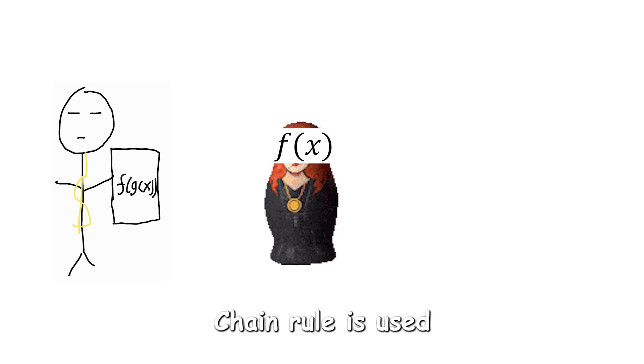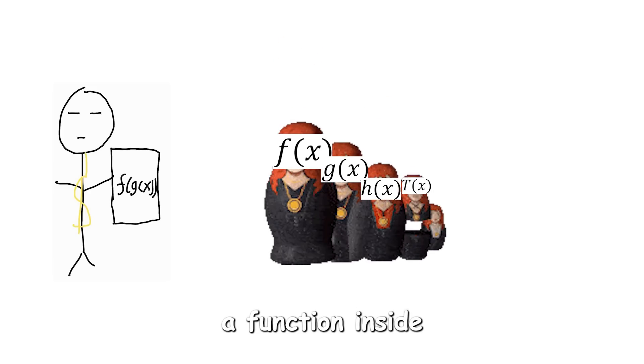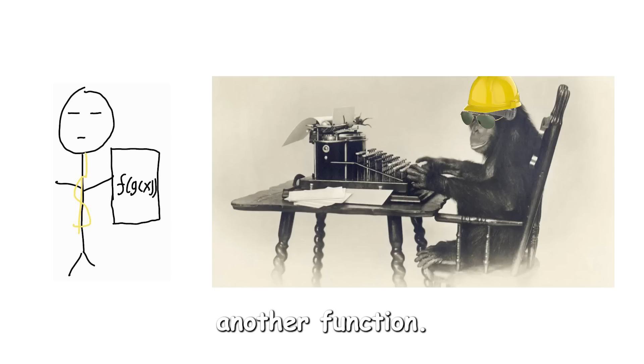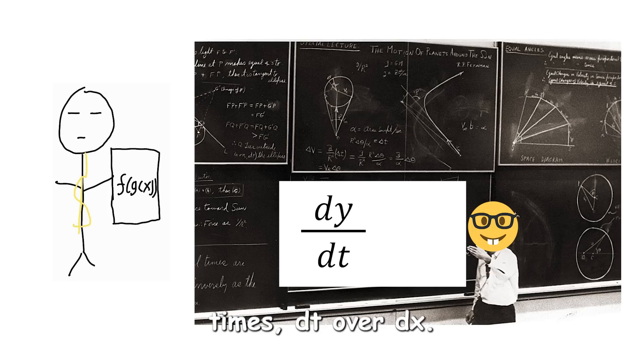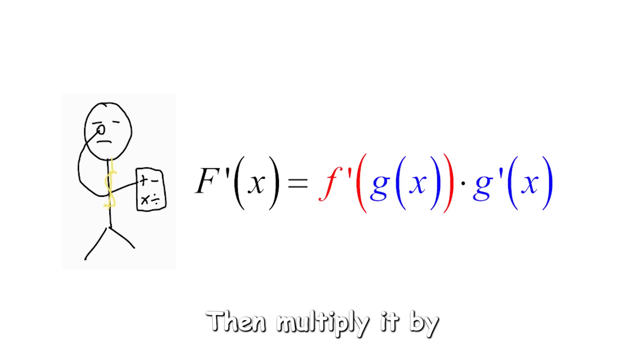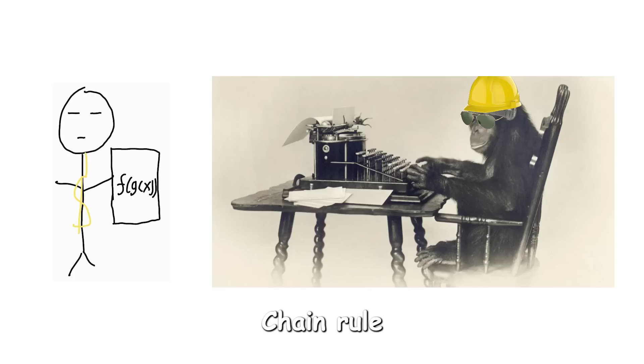Chain rule. Chain rule is used when you have a function inside another function. Apparently there is theory behind it, like dI over dt times dt over dx, but I don't really care and just know you differentiate the outer function, then multiply it by the derivative of the inner function.